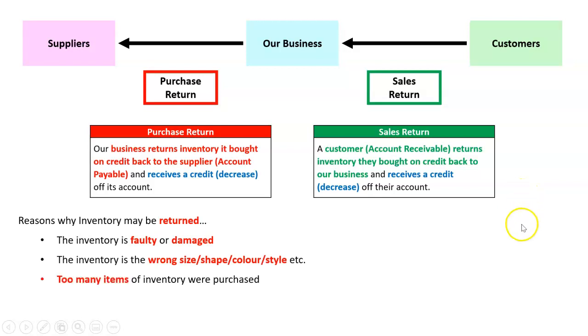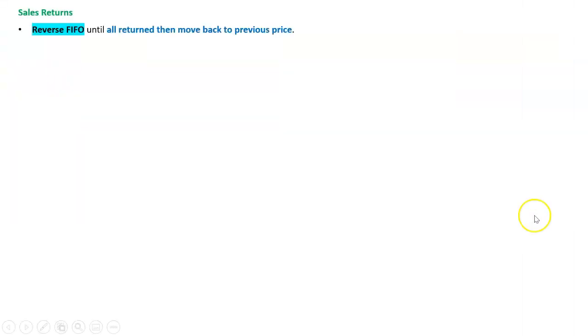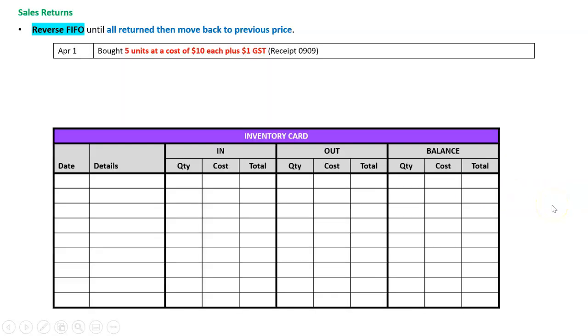Inventory could be returned because it's faulty or damaged, wrong size, shape, or color, or because we bought too many, or maybe the customer changed their mind. So how are we going to deal with sales returns under the FIFO method? You're actually not going to apply FIFO — we're going to do reverse FIFO until all units are returned, then move back to the previous price.